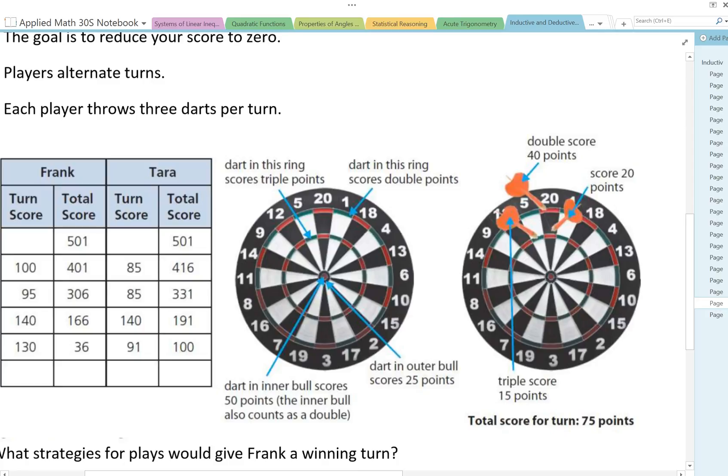And then this one here is 5 but because it's on the inner ring it's triple points so then you get 15.